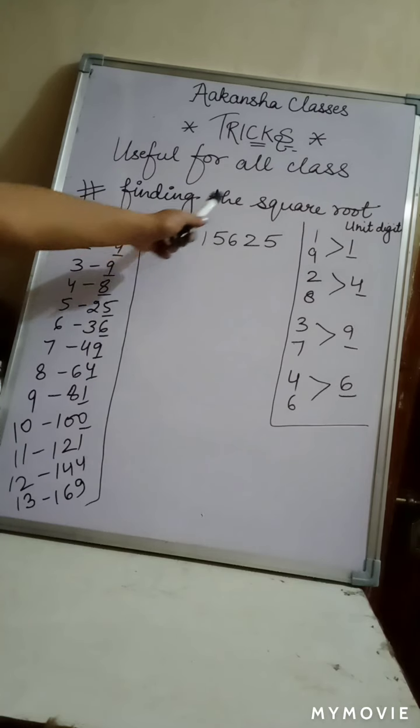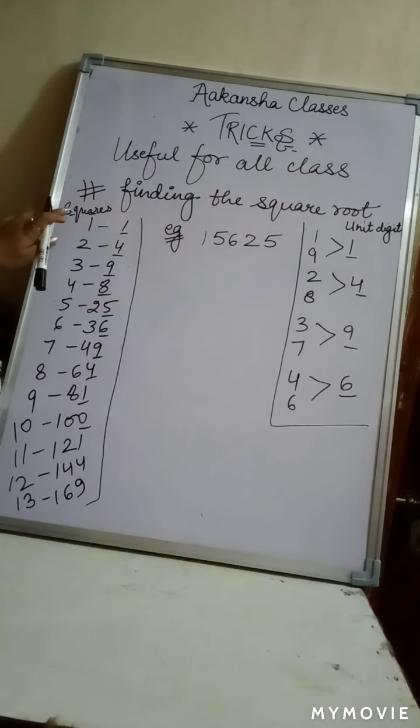For finding these square roots, okay, so what I have written here is, let's look here, 1 to 13 square. 1 square is 1, 2 square is 4, 3 square is 9, 4 square is 16, 5 square is 25, 6 square is 36, 7 square is 49, 8 square is 64, 9 square is 81, 10 square is 100, 11 square is 121, 12 square is 144, 13 square is 169. We will go to the next step.